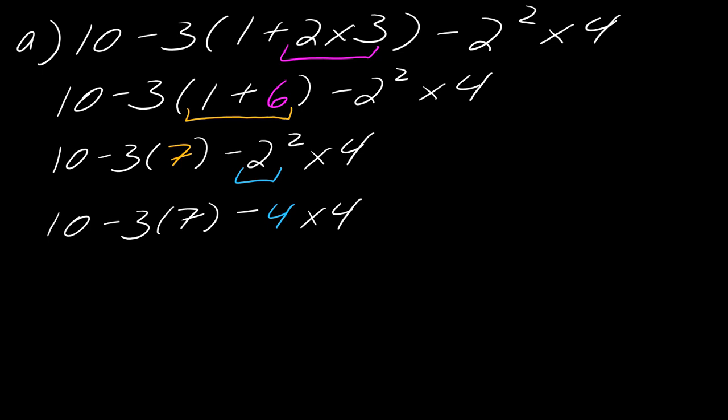So this is 10 minus 3 times 7 minus 4 times 4. And so now you'll notice here, these are both multiplication, so this is just a different way to write multiplication. As I move from left to right I'm going to do this part here, so this is 10 minus 21 minus 4 times 4, and then I'm going to do this 4 times 4.